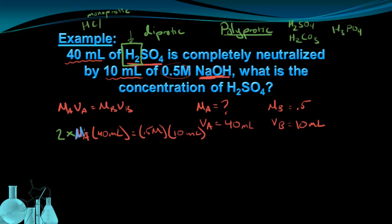So Ma, the molarity of the acid, is going to be equal to 0.5 times 10 over 2 times 40. We simply divided the 2 and the 40 from the left side of the equation to get the Ma by itself. And evaluating this expression is going to give us about 0.06 molar as a concentration of my acid.